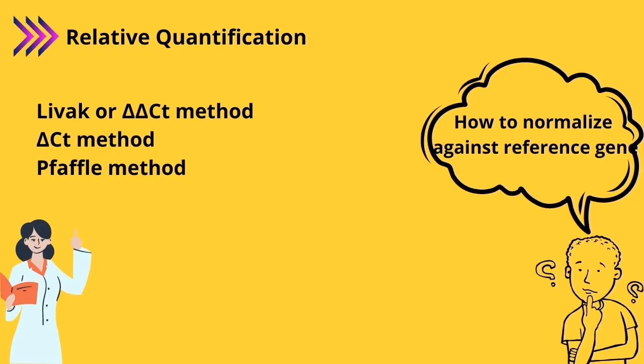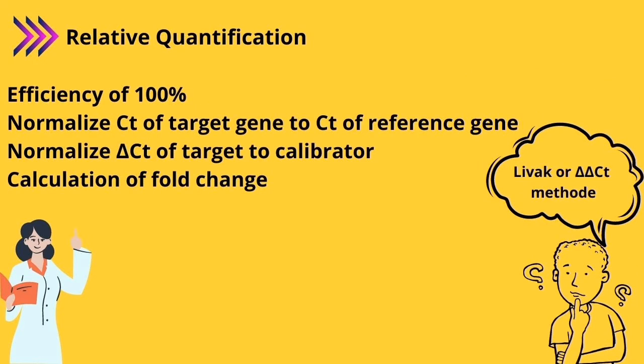Now let's see how to normalize against reference gene. We have three common methods for that: LiveΔΔCt or delta delta CT method, delta CT method, and Pfaffl method. To perform LiveΔΔCt method, efficiency of 100% is expected and you need to perform three steps. First, you have to normalize CT of target gene to CT of reference gene. For the second step, you must normalize delta CT of your gene of interest to calibrator. And for final step, calculate fold difference.